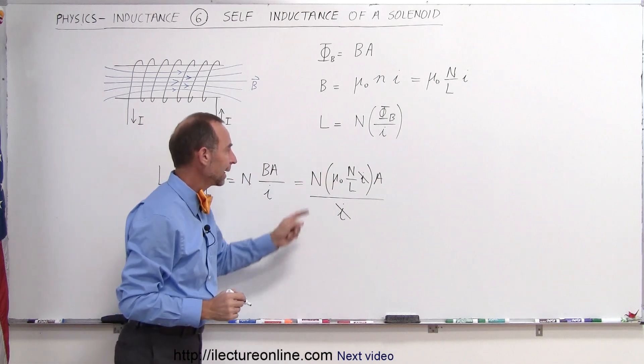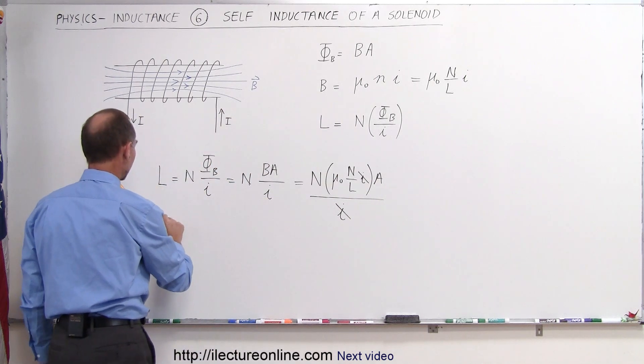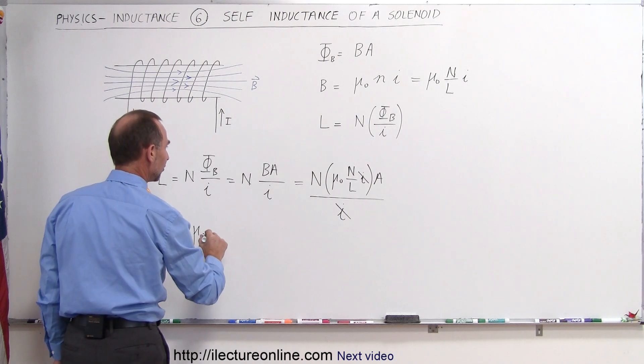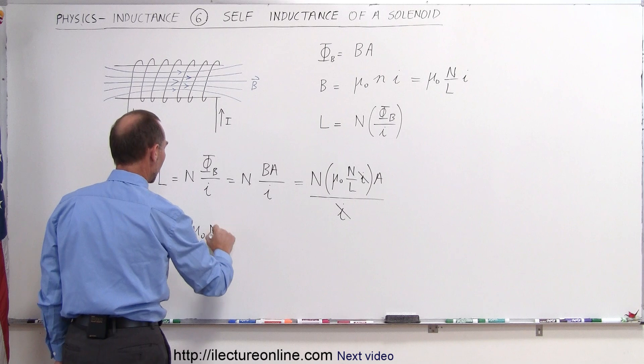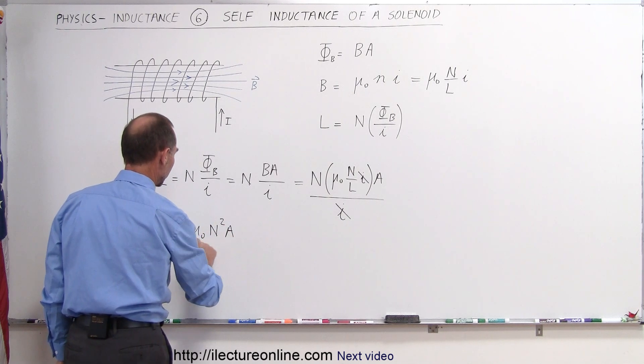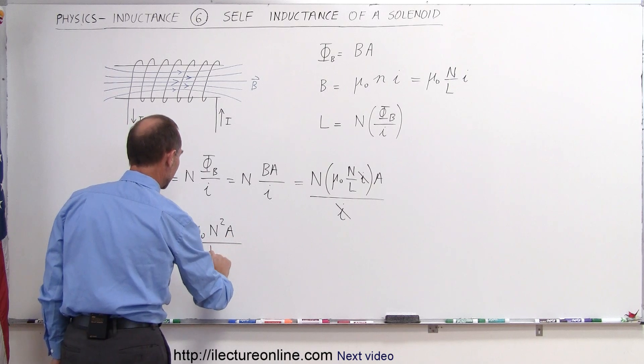And then we can multiply N times N, so finally we can say that the self-inductance of a solenoid is equal to mu sub-naught times the number of loops squared times the cross-sectional area and all divided by the length.